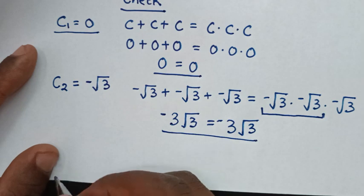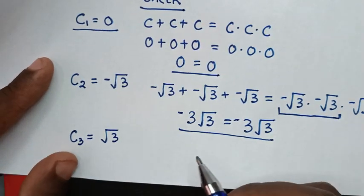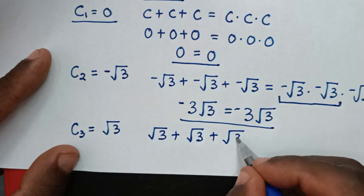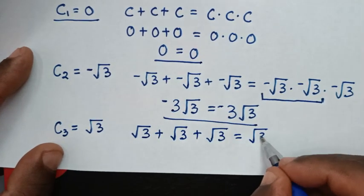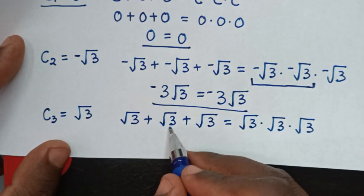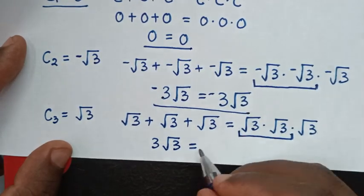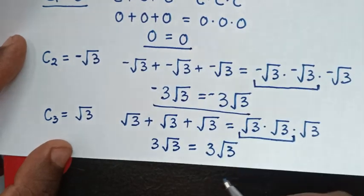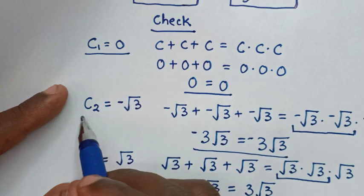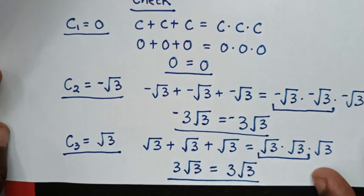Now let's check the third value c equals √3. On the left side: √3 plus √3 plus √3 equals 3√3. On the right side: √3 times √3 times √3 equals 3 times √3, which is 3√3. Left side and right side are equal, so it is true for c equals √3. We have verified all three solutions: c equals zero, c equals negative √3, and c equals positive √3.